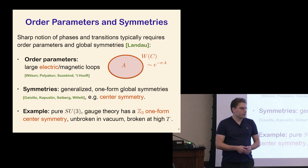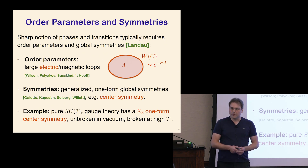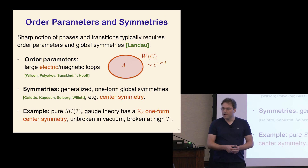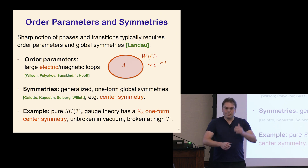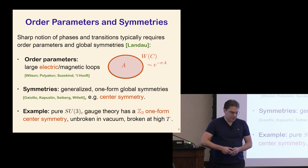One-form symmetries are a covariant generalization of the old center symmetries that act on the thermal circle. A simple example is pure SU(3) gauge theory without matter: it has a Z₃ center symmetry that acts on Wilson loops, unbroken in the confining phase at low temperature. At finite temperature there's a sharp phase transition, and that symmetry is spontaneously broken at high T.